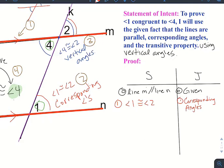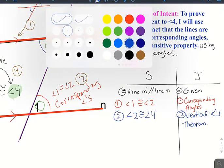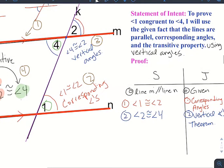We can then now call our vertical angle set - angle 2 is congruent to angle 4 by the vertical angle theorem. Then finally we can set up our transitive link. That was our final thing right here - we're going to name the transitive property.